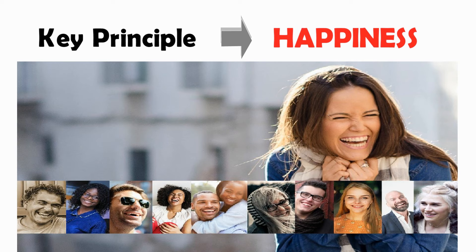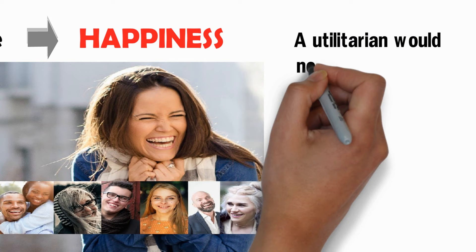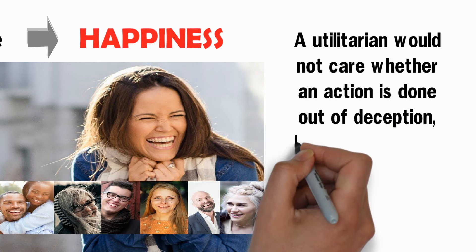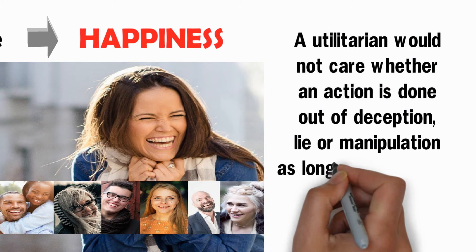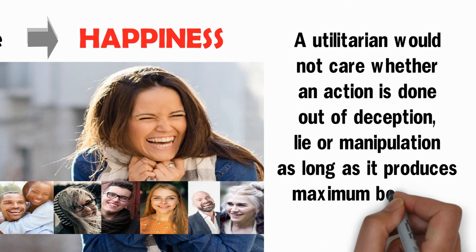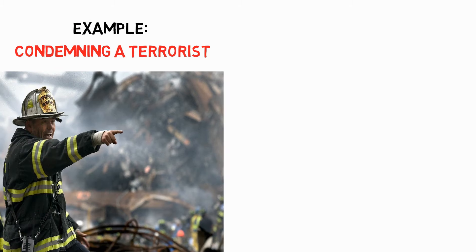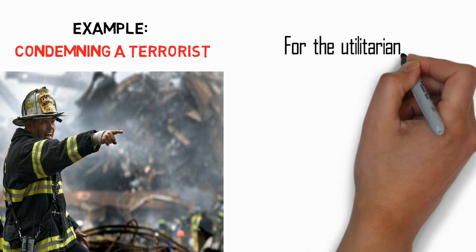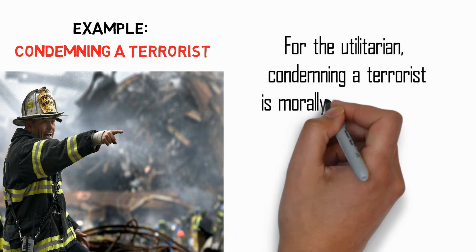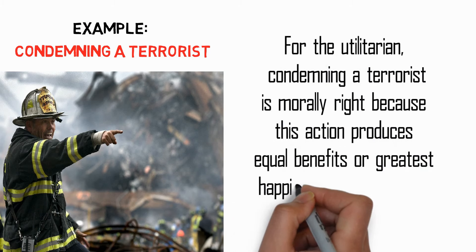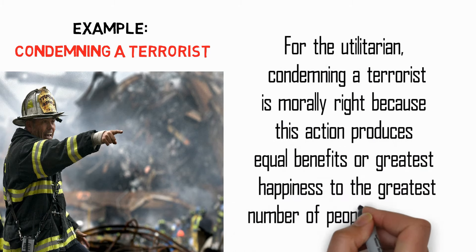This explains why the utilitarian would not care whether the action is done out of deception, lies, or manipulation, as long as it produces maximum benefits to many people. For example, the act of condemning a terrorist to death is morally right for the utilitarian because this action produces the greatest happiness to the greatest number of people concerned.